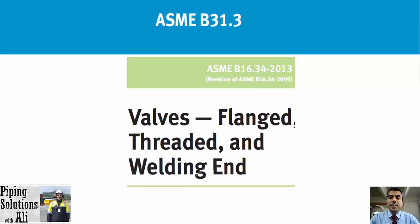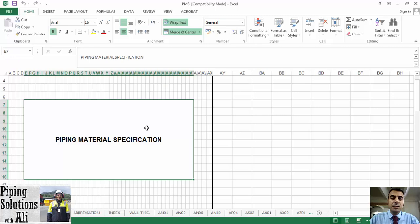The same approach has already been used for determining the class of valve based on ASME B16.34, specified for valves — flanged, threaded, and welding end — in Table 326.1 of ASME B31.3. In this standard, materials are categorized in group numbers, and the class of valve is determined by referring to the related rating table of its group number.